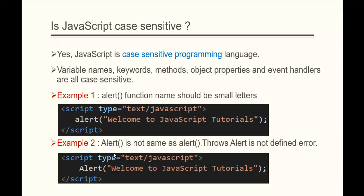Coming back to the presentation, this is what we demonstrated — the alert function name should be in small letters. In the second example, you can observe that capital 'A' Alert is not the same as lowercase alert, and that throws the error 'is not defined'.